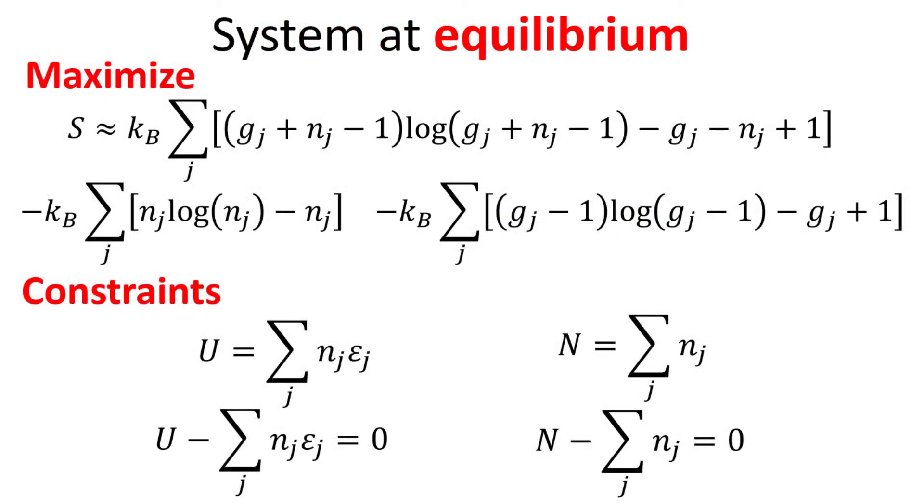Next, taking the cue from Boltzmann, to find the electron distribution at equilibrium, we should seek to maximize the system entropy, while at the same time imposing the constraints on the total energy and the number of electrons.